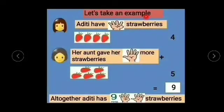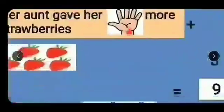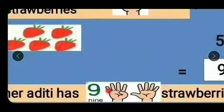Let us take an example. Aditi has four strawberries. So children, take out four fingers on your left hand. Her aunt gave her five more strawberries. Now take out five fingers on your right hand. Let us count all together: 1, 2, 3, 4, 5.